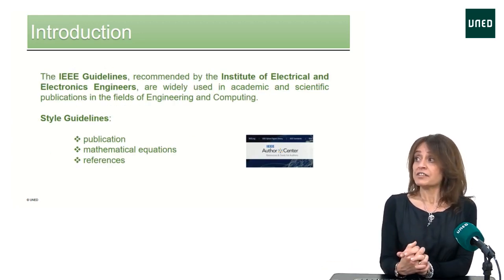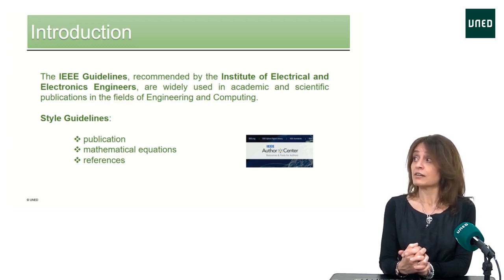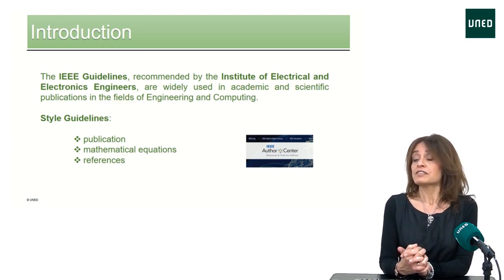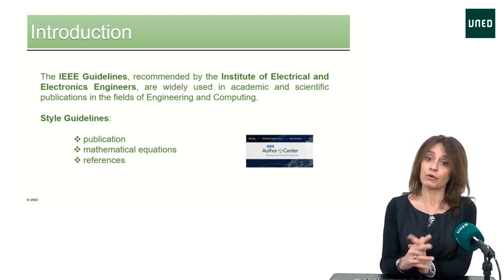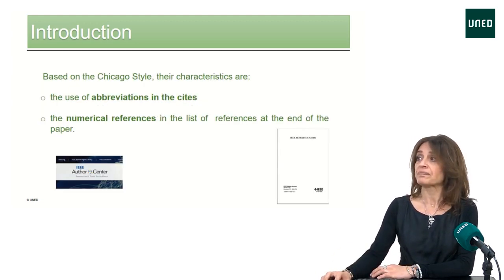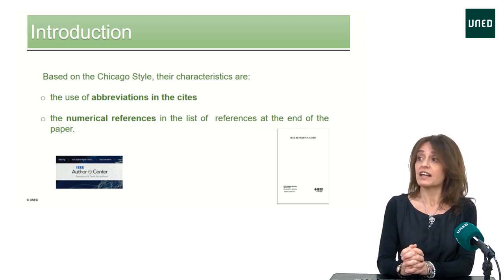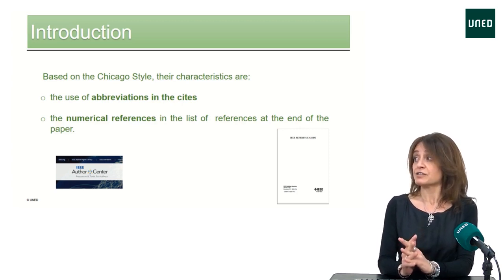The IEEE guidelines recommended by the Institute of Electrical and Electronic Engineers are widely used in academic and scientific publications in the fields of engineering and computing. These style guidelines cover issues like publication, mathematical equations, or references, for instance. Based on the Chicago style, the characteristics are the use of abbreviations in the citations and the numerical references in the list of references at the end of the paper.